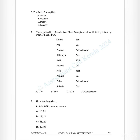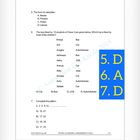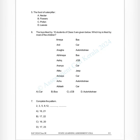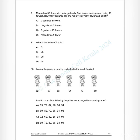Question 7: Complete the pattern — 2, 3, 5, 8, 12, dash and dash. A) 16, 21; B) 17, 22; C) 16, 20; D) 17, 23. Answer: D) 17, 23. Question 8: Mira has 33 flowers to make garlands. She makes each garland using 10 flowers. How many garlands can she make and how many flowers will be left? A) three garlands, three flowers; B) ten garlands, three flowers; C) three garlands, ten flowers; D) ten garlands, one flower.